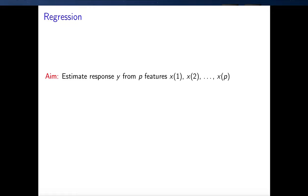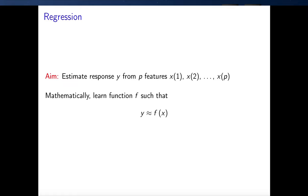Our aim here is to estimate a certain quantity that we call the response y from p features that we call x1, x2 to xp. So the number of features is going to be p, which is some arbitrary number. Mathematically, what we want to do is learn a function f such that when we get a new vector of features — p new features — we can estimate y from those p features. We'll see an example in a moment.